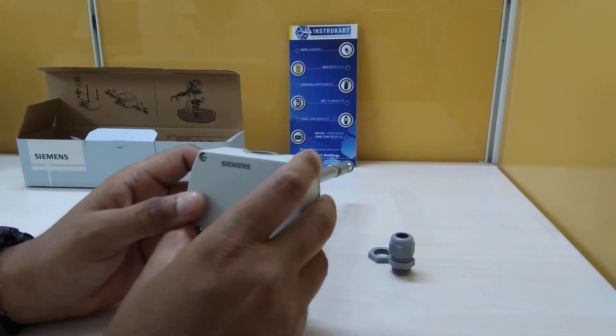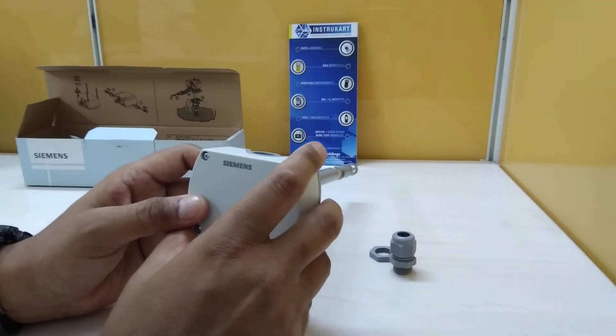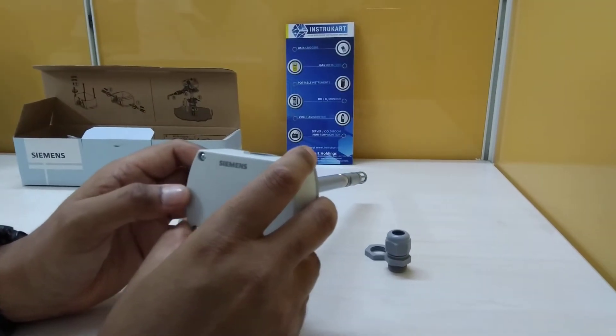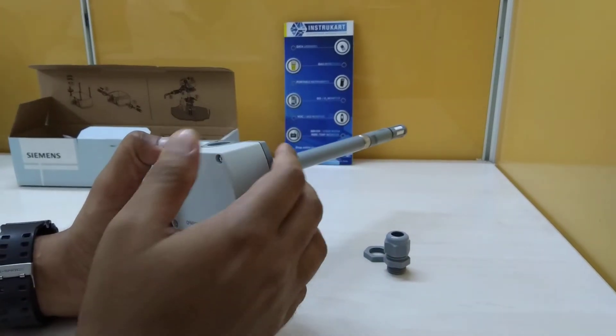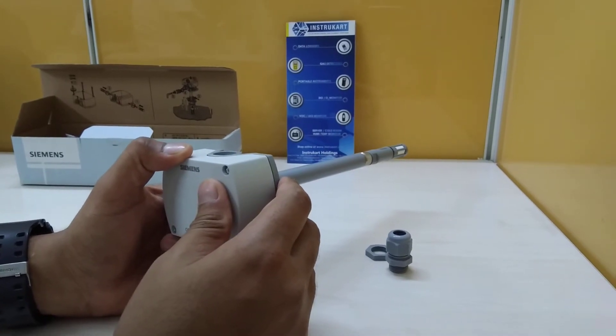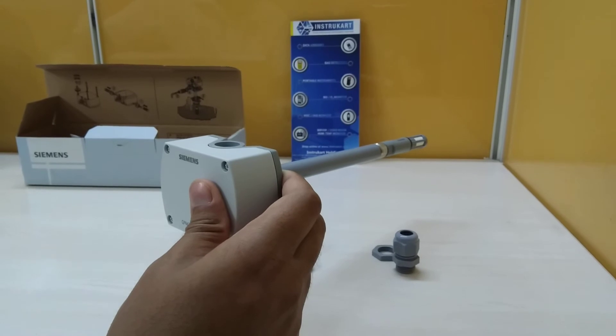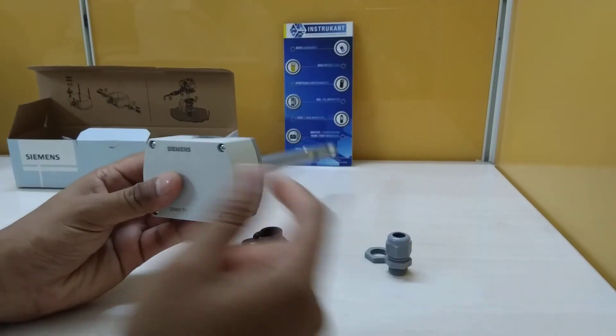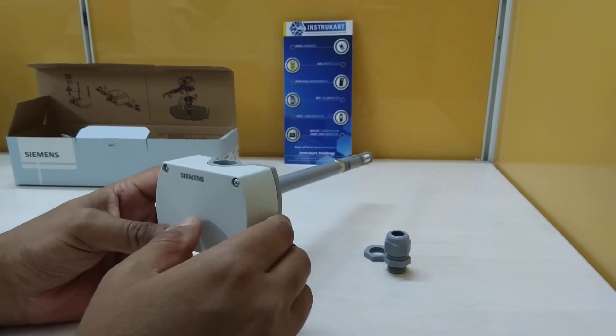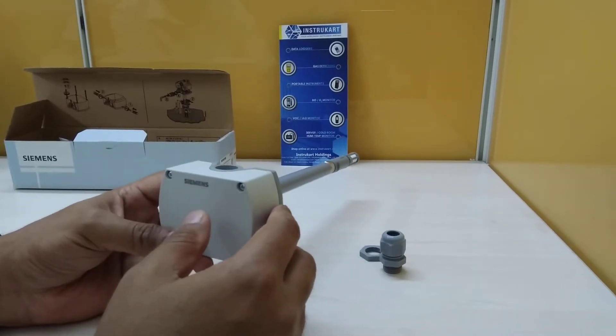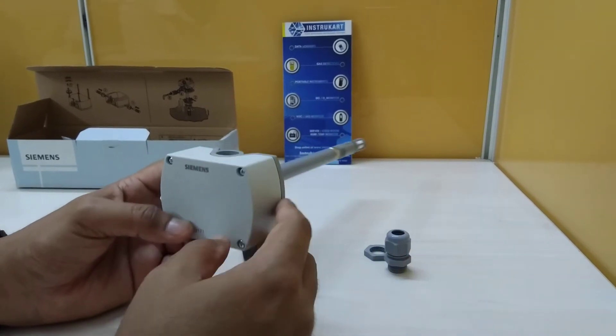And the accuracy for temperature is 0.8 degrees Celsius and RH is plus or minus 2 percent. This has got an immersion length of 90 to 206 mm and this has got a 4 to 20 milliamps output where you can take the data to your building management system through this 4 to 20 milliamps instrument's output.